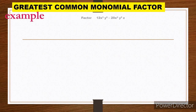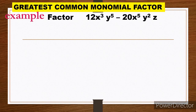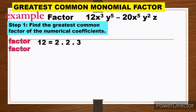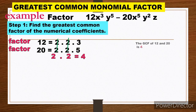Number 1 example: factor 12x³y⁵ minus 20x⁵y²z. Step 1: find the greatest common factor of the numerical coefficients. Get the prime factors: 12 = 2 × 2 × 3, and 20 = 2 × 2 × 5. The common factors are 2 and 2. Multiply: 2 × 2 = 4. So the GCF of 12 and 20 is 4.